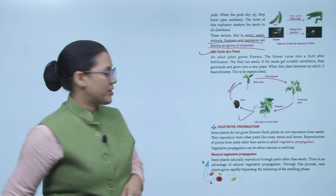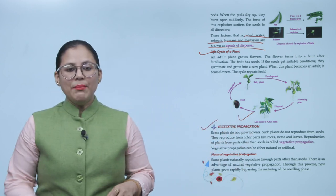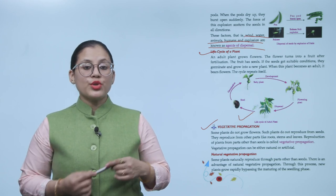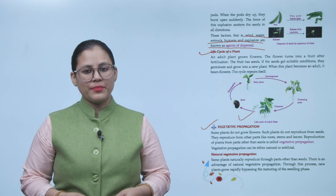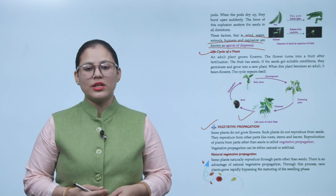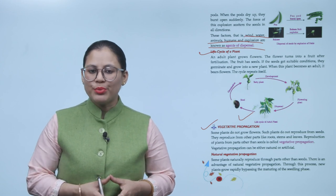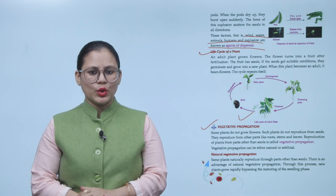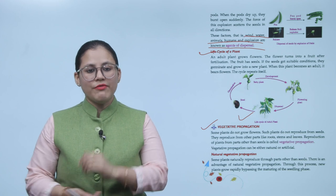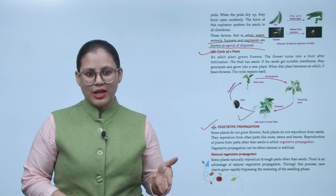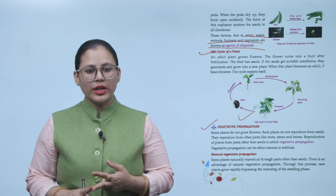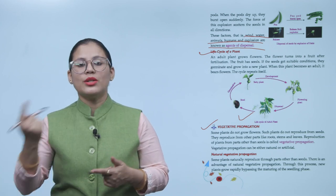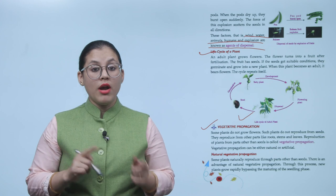Vegetative propagation. Some plants do not grow flowers. Such plants do not reproduce from seeds. They reproduce from other parts like roots, stems, and leaves. Reproduction of plants from parts other than seeds is called vegetative propagation. Vegetative propagation can be either natural or artificial.